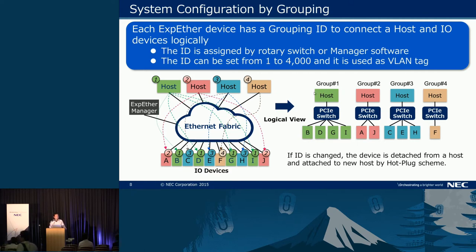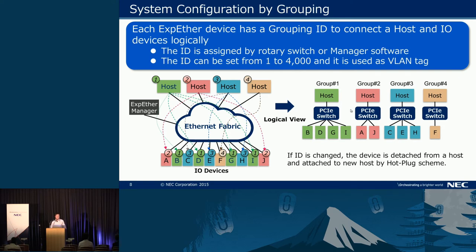This shows how to configure the system. XPS Ether can support multiple hosts and many I/O devices. For example, this shows four hosts and ten I/O devices. To connect hosts and I/O devices, XPS Ether manager software assigns a grouping ID to each host and I/O device. In this case, device A is two, B is one, C is three, so four systems are configured. The ID can be set from one to four thousand, and it is used as a VLAN tag to isolate the network among hosts.